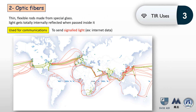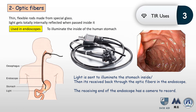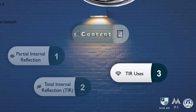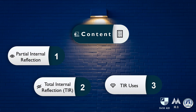Optic fibers connect continents together for thousands of kilometers and are usually buried under the sea — that's how internet and information is accessible everywhere. They also have medical applications in endoscopes, a device inserted through the mouth to view the stomach. Light travels through the optic fiber to illuminate the stomach, and the reflected light travels back through the fibers to a camera, allowing doctors to view the inside.